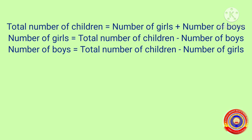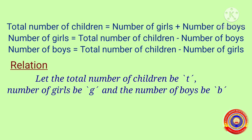Now we have to find the relation between the total number of children, number of girls, and the number of boys. Total number of children is equal to number of girls plus number of boys. Number of girls is equal to total number of children minus number of boys. Number of boys is equal to total number of children minus number of girls. Let the total number of children be T, number of girls be G, and the number of boys be B. The relations are: T is equal to G plus B, G is equal to T minus B, and B is equal to T minus G.